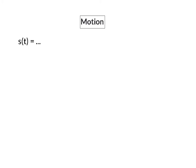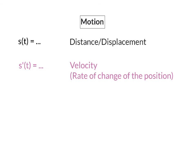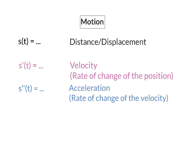We can also look at the rate of change of moving objects. The original function will always represent the distance or displacement in terms of time. When you calculate the first derivative of this function, you are determining the velocity — the rate of change of the position. The second derivative, or the derivative of the first derivative, calculates the acceleration, or the rate of change of the velocity.